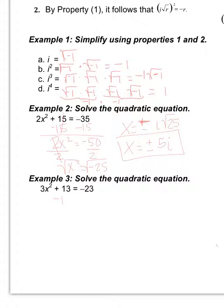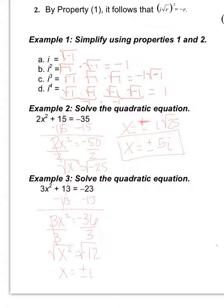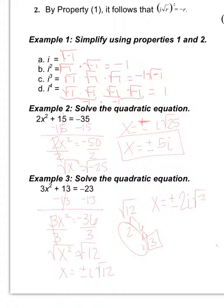Example 3: subtract 13 to get 3x squared equals negative 36, then divide by 3, so x squared equals negative 12. Take the square root — bring the negative outside as i, leaving the square root of 12. Since 12 is not a perfect square, use a factor tree: 2 times 6, then 2 times 3. We have a pair of 2's and a leftover 3. So we bring the 2 out in front of i, giving us positive and negative 2i times the square root of 3.